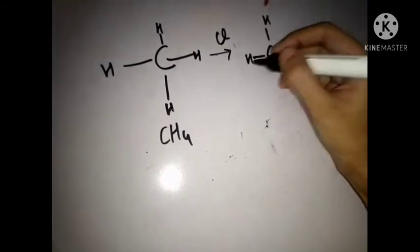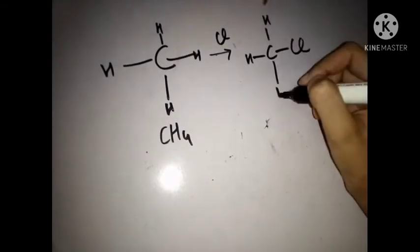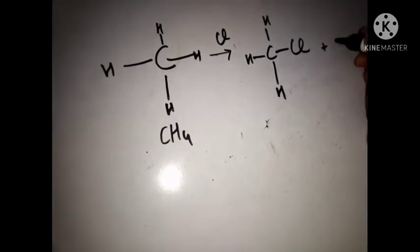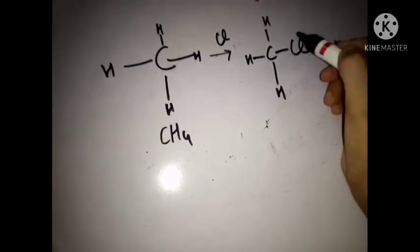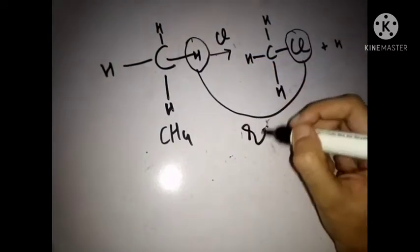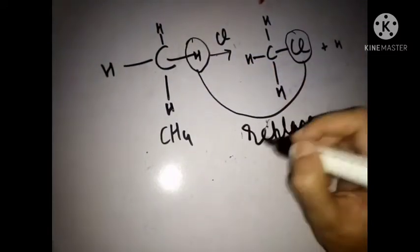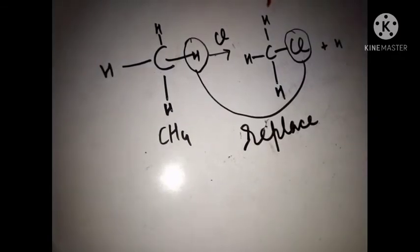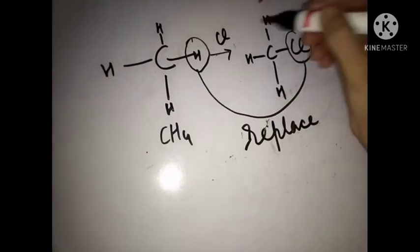It means that we have taken CH4 methane and we added Cl in place of one hydrogen. So we have replaced one hydrogen with Cl and the new compound formed is CH3Cl.